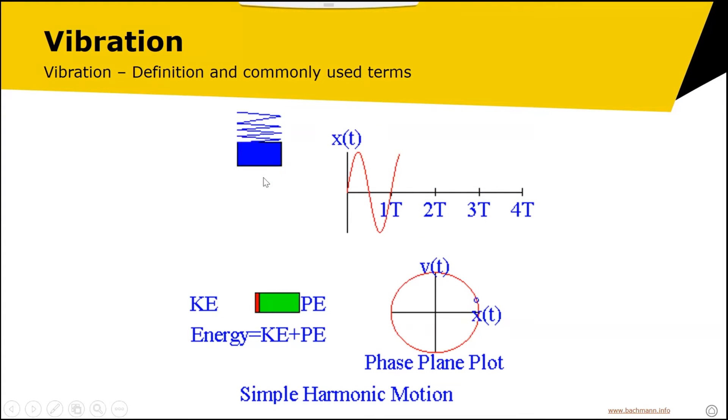You also have the acceleration, which is going in the opposite direction to the displacement. When the displacement is at one extreme, the acceleration is at its maximum, pulling the mass back in either direction. What we have is this whole cycle between kinetic energy and potential energy—the potential energy in the spring, the kinetic energy from the movement of the mass. These oscillate between one another, providing vibration.